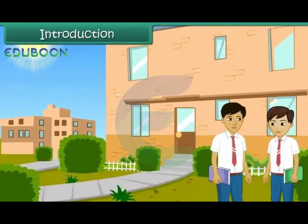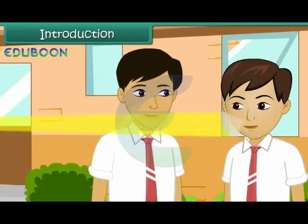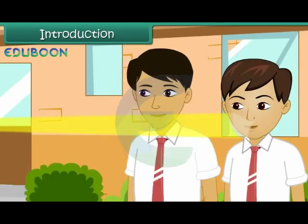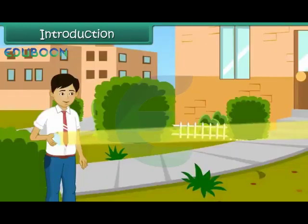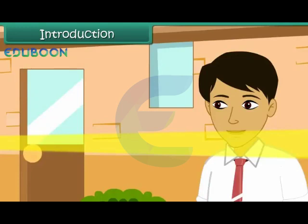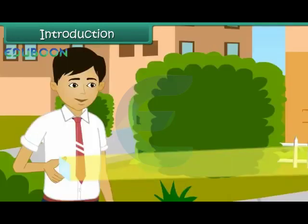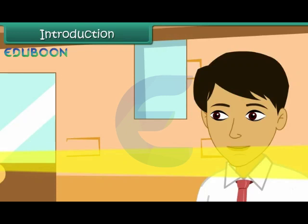It is recess time at school. You and your friends are out in the lawns. Suddenly a bright light hits you in the eye. You and your friends move to a different location. This time the bright light hits your friend. The bright light seems to be following you. You are confused. You look around and see Amman standing at a distance with a mirror in his hand.